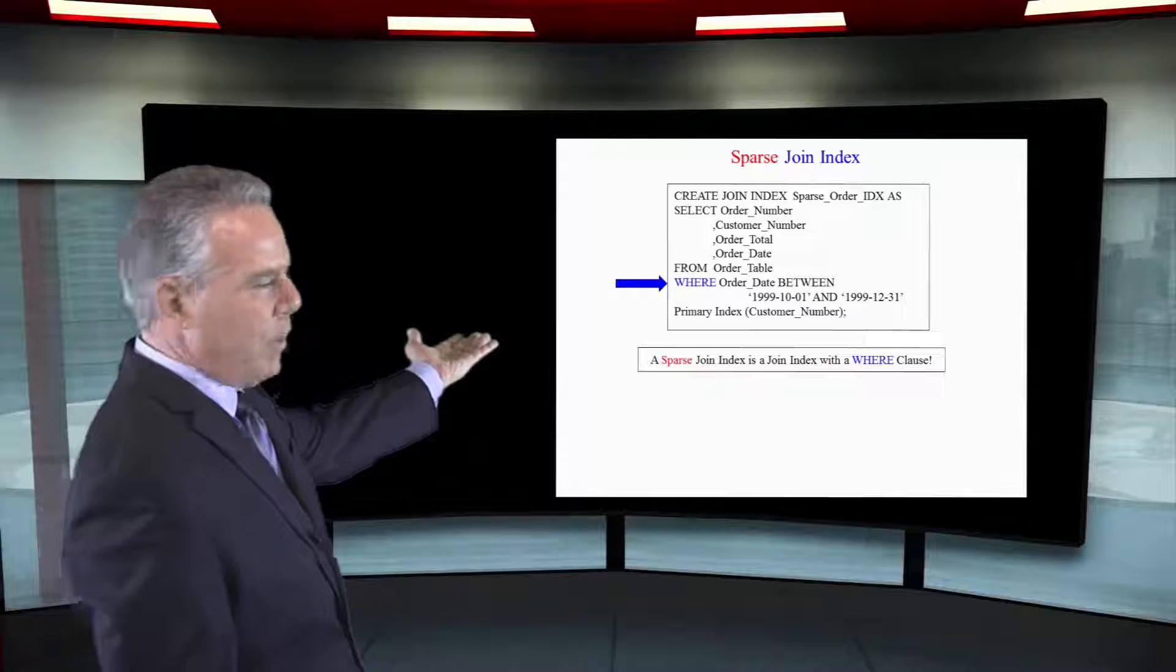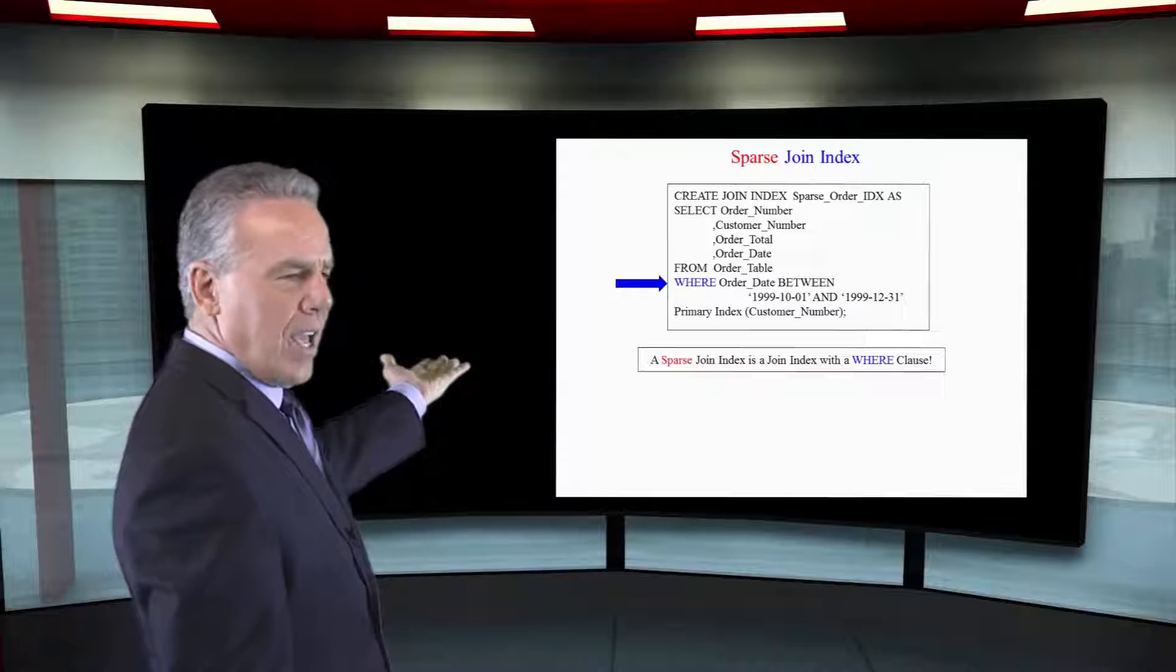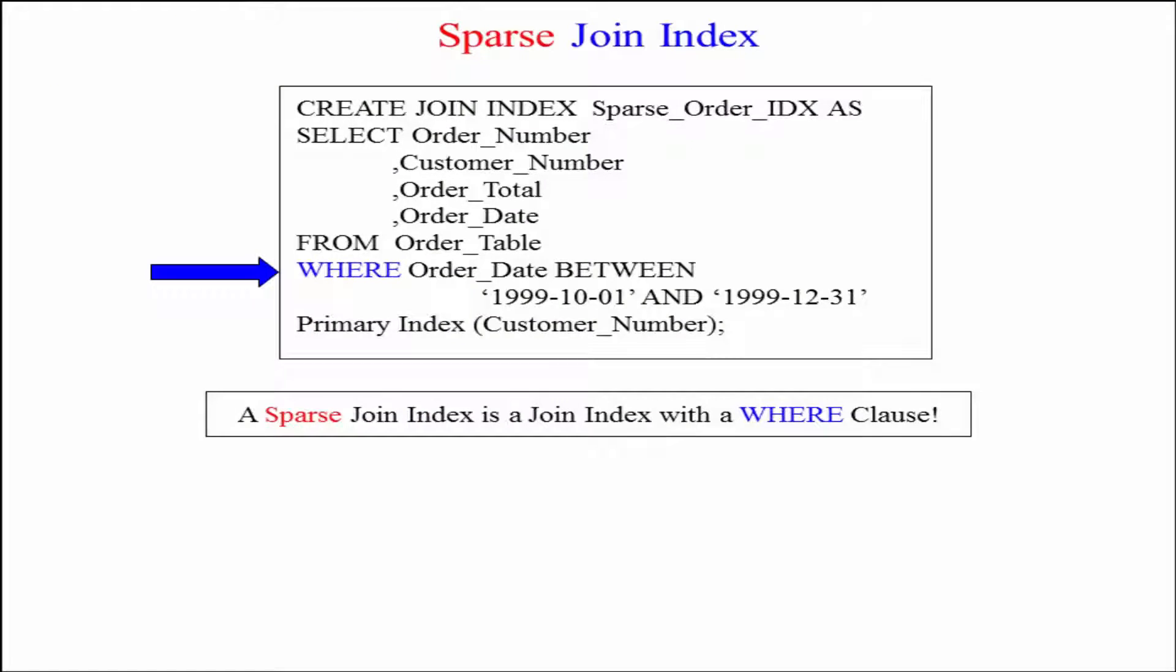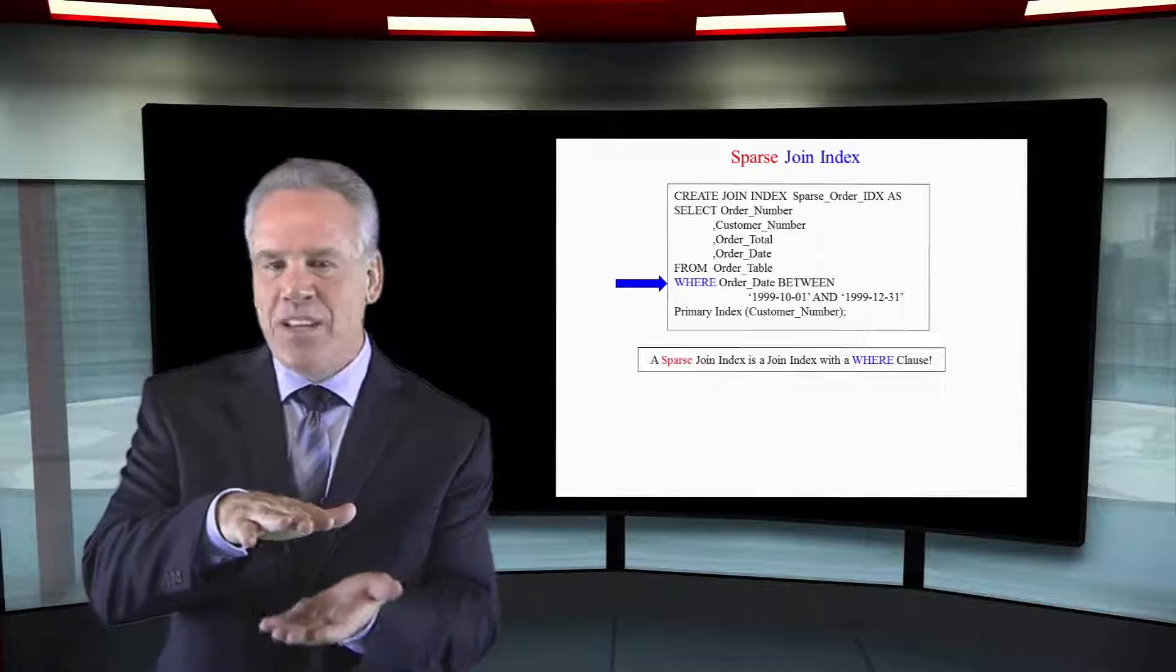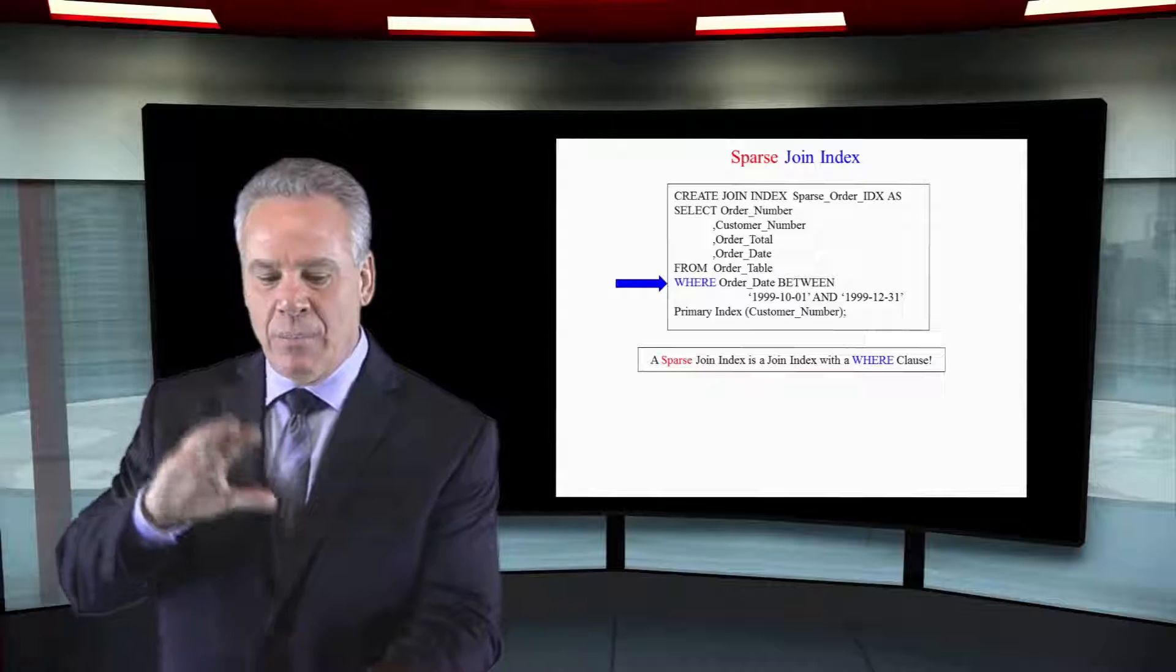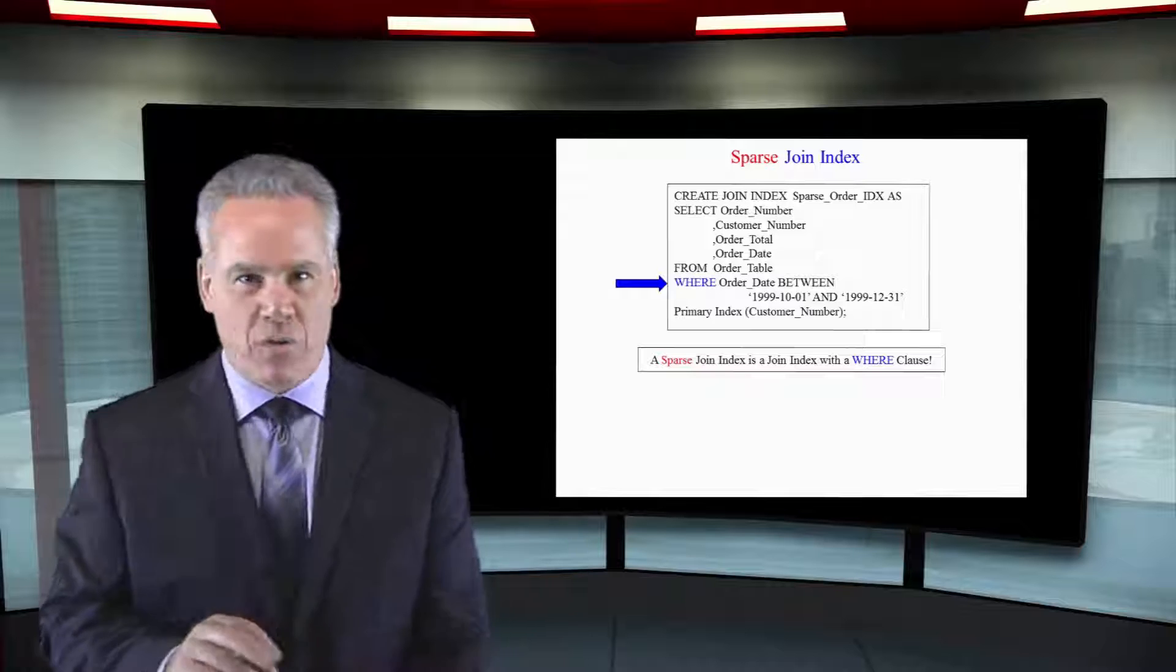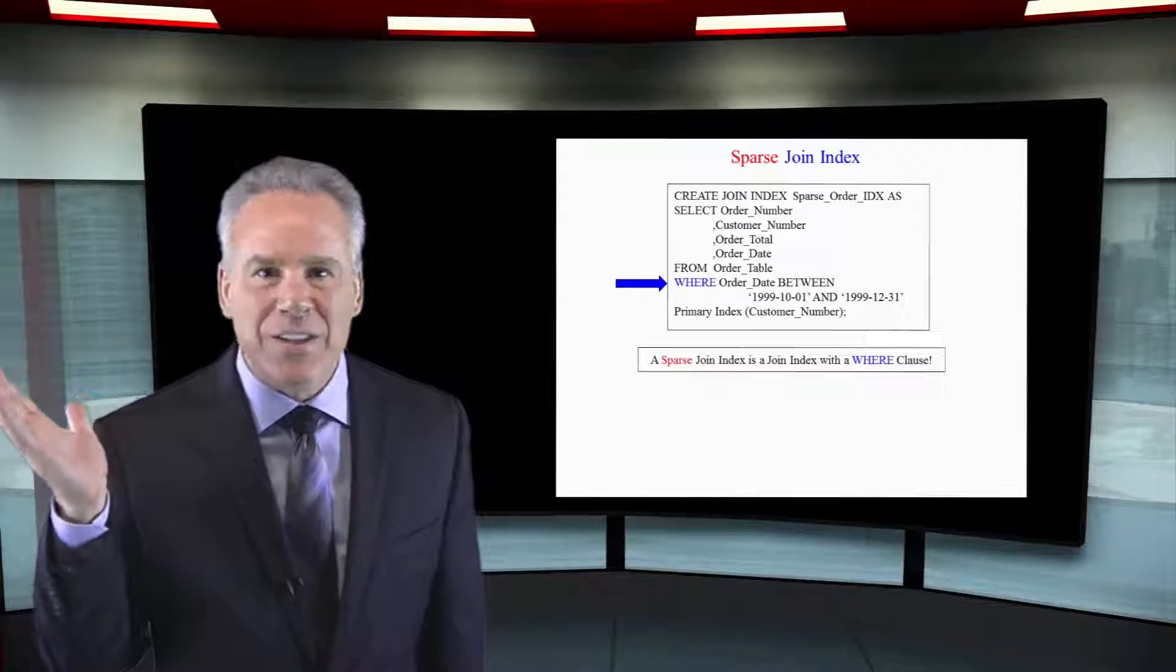Here, we're going to actually say where the order dates between 1999-10-01 and 1999-12-31. We're just going to get the last three months of the current year in the join index, taking up just a little space but adding a huge performance impact because that's what everybody's querying.